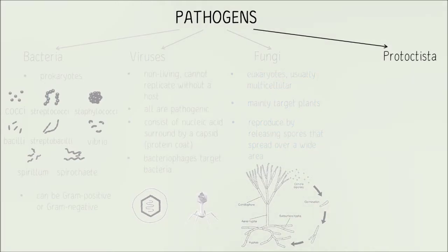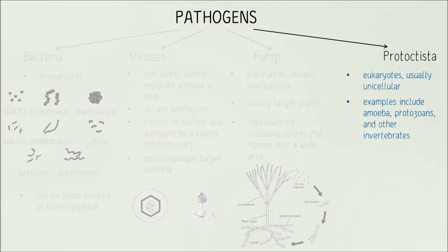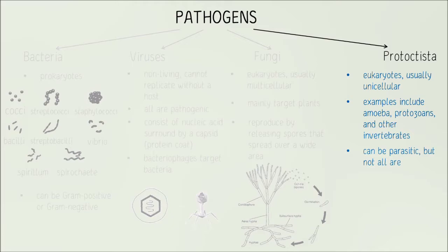Finally, protoctista. They are also eukaryotes but most commonly unicellular. Examples include amoeba and paramecium. Sometimes they don't even have a cell wall — just cytoplasm floating in seawater or freshwater habitats. Some are parasitic, some autotrophic, some heterotrophic, and some both. They are commonly asked about in exam questions, so worth reading further.